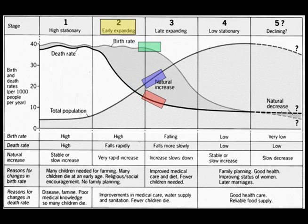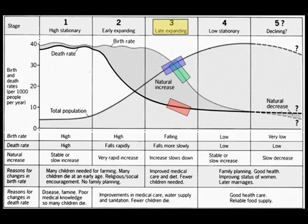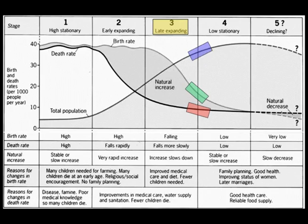As the country continues to develop, it moves into stage three. During stage three, the birth rate begins to decline along with the death rate. The result is a slow growth rate overall. People's standard of living tends to increase, they live longer, and children are no longer seen as a necessity.